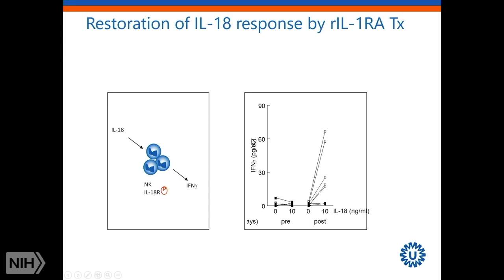The defect of the NK cell/IL-18 axis is reversible, now shown by measuring interferon gamma as a readout of NK cell lytic function — this is restored to normal interferon gamma levels after treatment with anakinra.